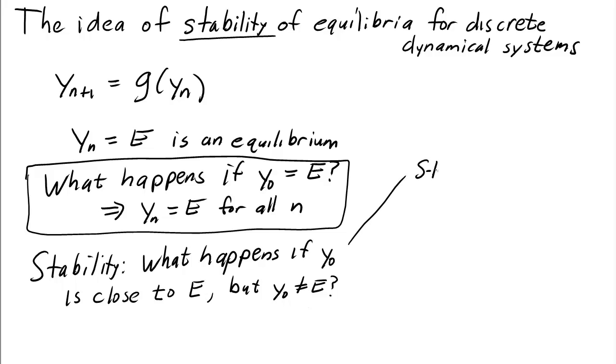If the equilibrium is stable, then the state variable yn will stay close to e or even approach e. It might even get closer.